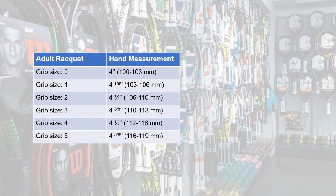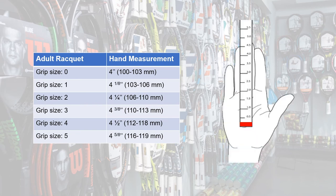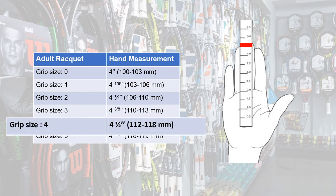The second, more precise method requires the use of a ruler. Ask the customer to open their hand and place their fingers together with thumb open. Align the ruler edge with the bottom lateral crease of the palm and measure to the tip of the ring finger. In the example shown, the grip size indicated is 4.5 inches, which corresponds to a size 4 on the chart.